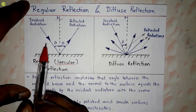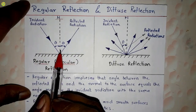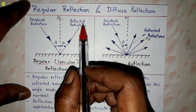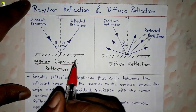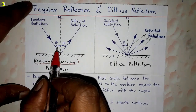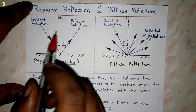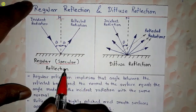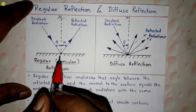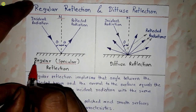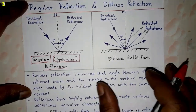In regular reflection, the angle between the incident radiation and the normal to the surface is equal to the angle between the reflected radiation and the normal to the surface. When angle theta is equal for both, this is called regular or specular reflection.